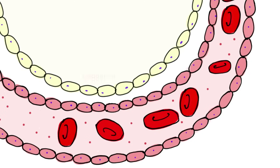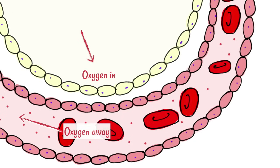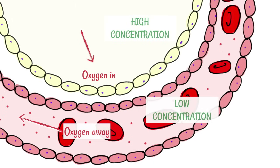Oxygen is constantly being supplied through breathing but is also being taken away from this area because of blood flow. This means we are constantly maintaining a concentration gradient, which is what allows this gas exchange to continue.